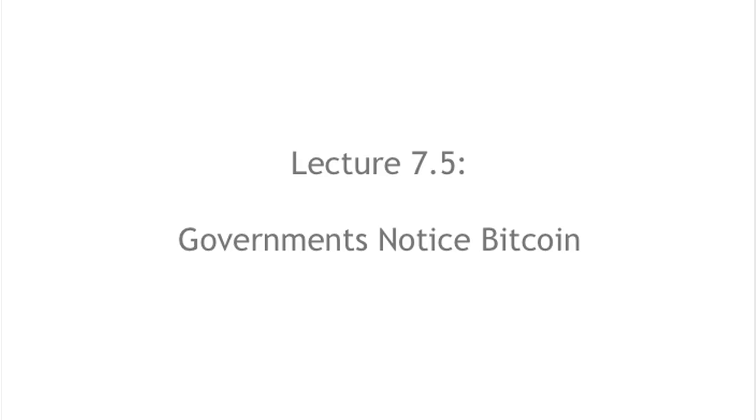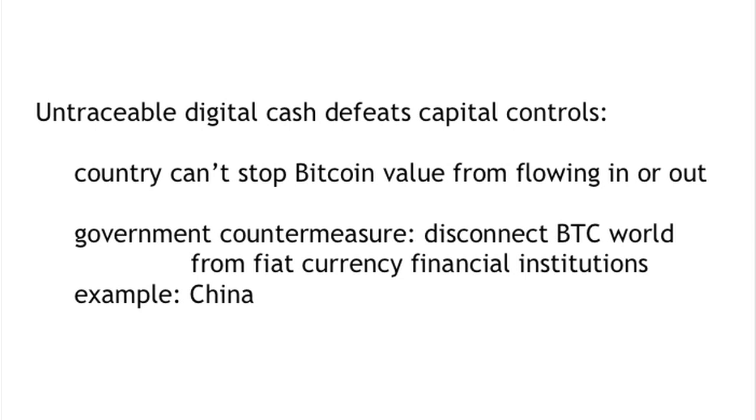Thus far in lecture seven, we've talked about the growth of Bitcoin and about how Bitcoin operates and who's in charge of it. I want to spend the rest of lecture seven talking about governments' interaction with Bitcoin and government attempts to regulate Bitcoin. We'll start simply with the moment when governments noticed Bitcoin — when Bitcoin became big enough as a phenomenon that governments started to worry about the impact it might have and started to talk about how to react to it.